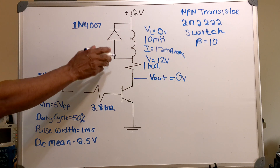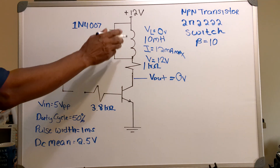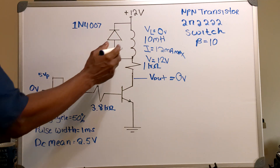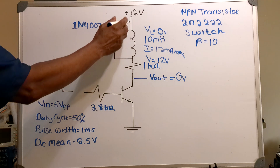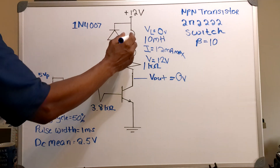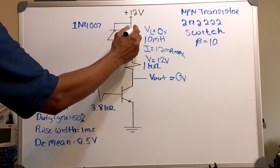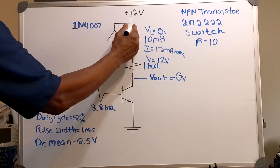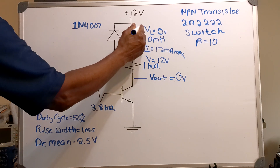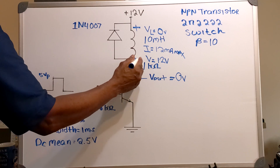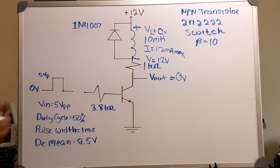At this point the transistor is in saturation. Across the inductor, the polarity is positive at one end and negative at the other end.